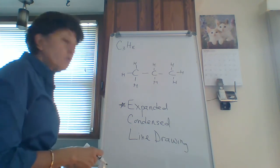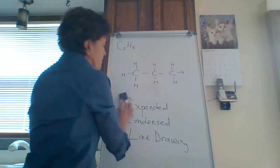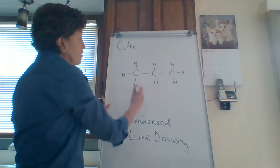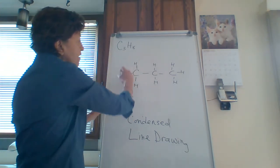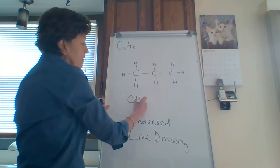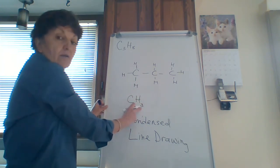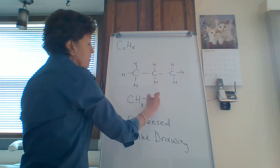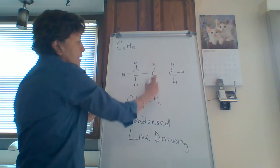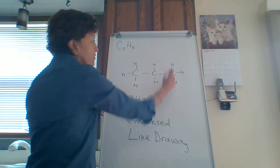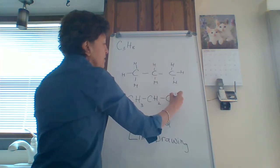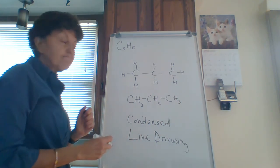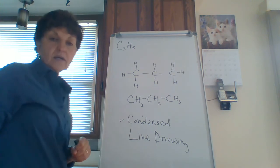Now if you want to turn this into a condensed formula, you take your carbon and tell me how many hydrogens are around it — three, so CH3. Then you draw a line and write the next carbon with two hydrogens around it: CH2. And then the last one: carbon with three hydrogens, CH3. That's an example of a condensed structural formula.